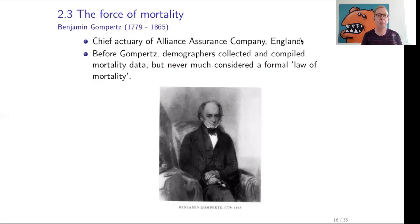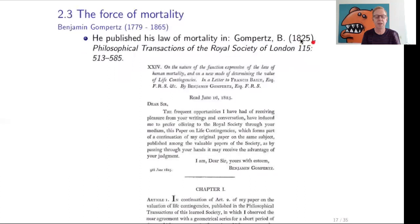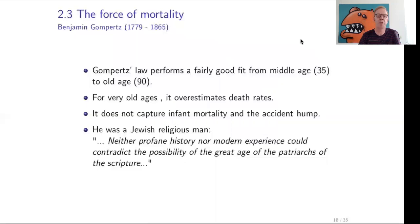People who study survival and mortality collected and compiled mortality data and used it, but they never considered a formal law of mortality — they used statistical data about mortality for different ages. Gompertz was the first to find a formal mathematical law for it. He published his law of mortality in 1825 in the Philosophical Transactions of the Royal Society of London. Gompertz's law performs a fairly good fit from middle ages, around 35, to old ages around 90, though for very old ages it overestimates death rates.